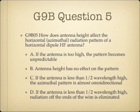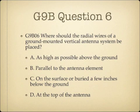Question 5: How does antenna height affect the horizontal azimuth radiation pattern of a horizontal dipole HF antenna? A. If the antenna is too high, the pattern becomes unpredictable. B. Antenna height has no effect on the pattern. C. If the antenna is less than one half wavelength high, the azimuthal pattern is almost omnidirectional. Or D. If the antenna is less than one half wavelength high, the radiation off the ends of the wire is eliminated. Question 6: Where should the radial wires of a ground mounted vertical antenna system be placed? A. As high as possible above the ground. B. Parallel to the antenna element. C. On the surface or buried a few inches below the ground. Or D. At the top of the antenna.